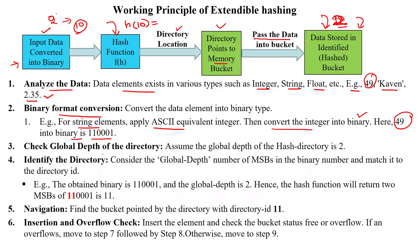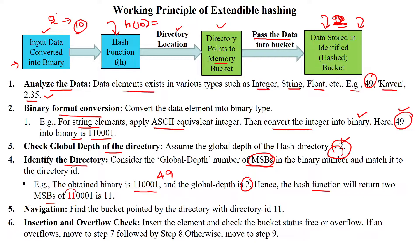Next, we check the global depth of the directory. Assume the global depth of the hash directory is 2. Based on that we identify the index for 49 in the global directory using the binary digits. The hash function considers the most significant bits (MSBs) of the binary number — though some authors use least significant bits. Here we use MSBs. The binary digit for 49 is 110001, and with global depth 2, the hash function returns the two MSBs: '11'.